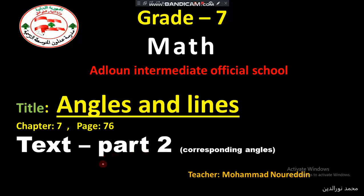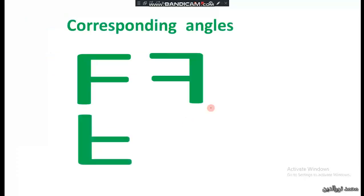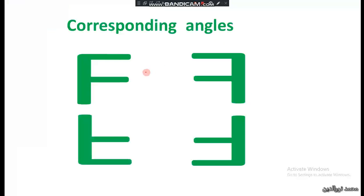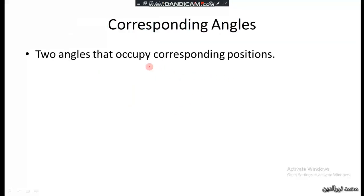Hello Grade 5! In this video we are going to talk about corresponding angles. What are corresponding angles and how can we test for them? Just remember the letter F. Corresponding angles are two angles that occupy corresponding positions — they are at the same location, the same corresponding positions.